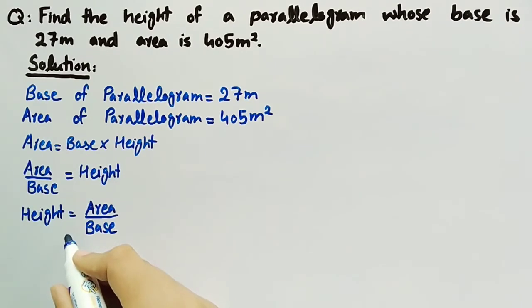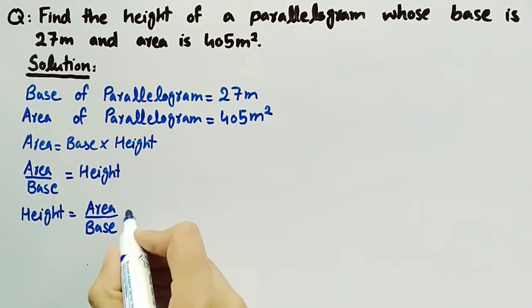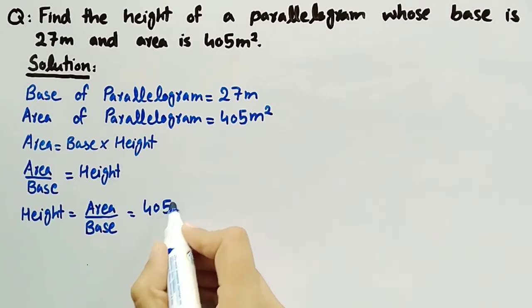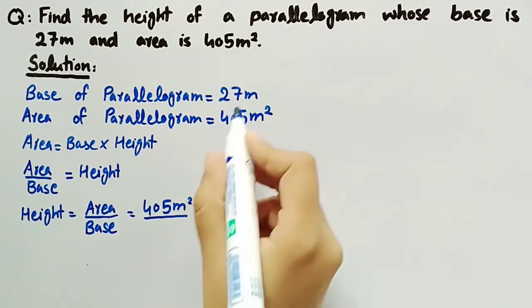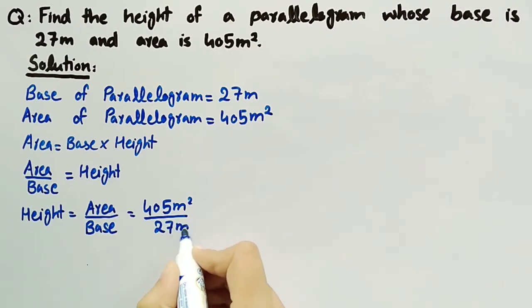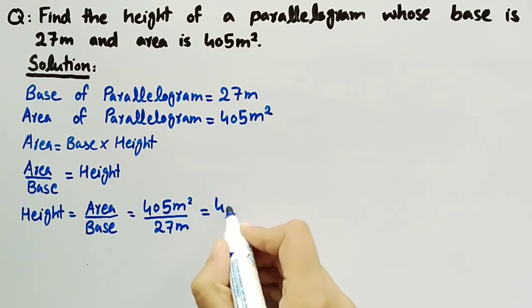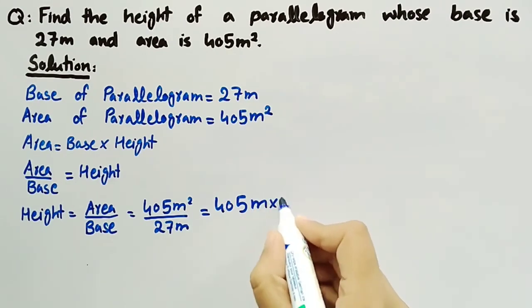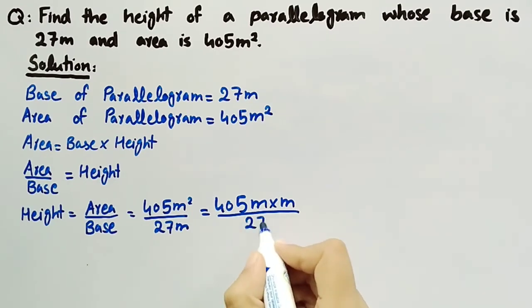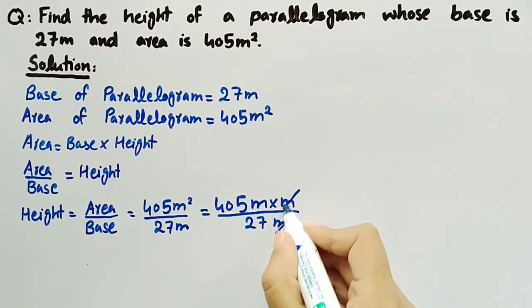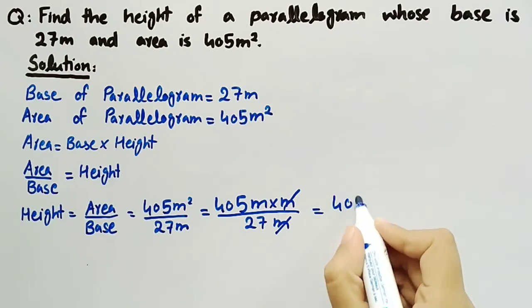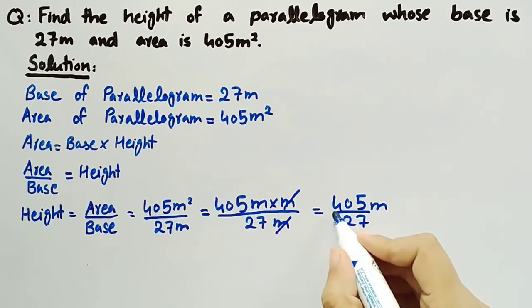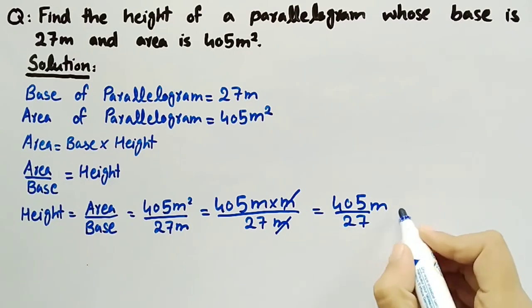Now we will substitute the values. It is given that area of parallelogram is equal to 405 meter square, and base is given as 27 meters. We can write this as 405 meter square — that is meter multiplied by meter — divided by 27 meters. This meter will be cancelled out, and we are left with 405 divided by 27 meters. When we divide 405 by 27, we get 15 meters.